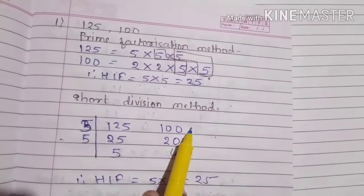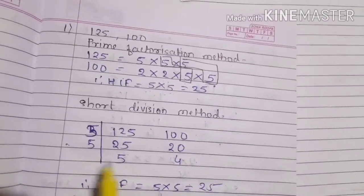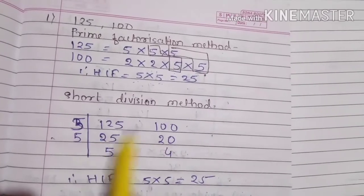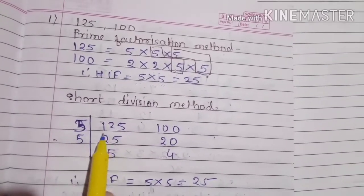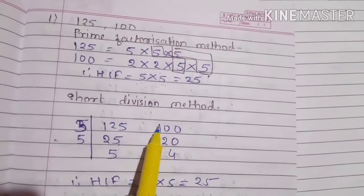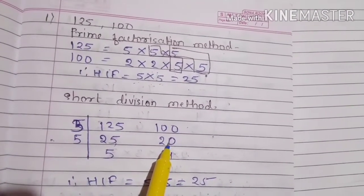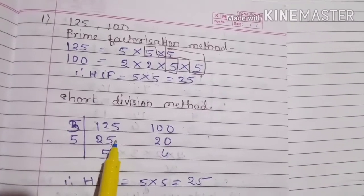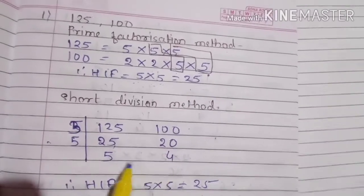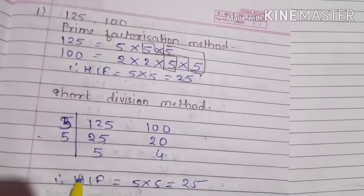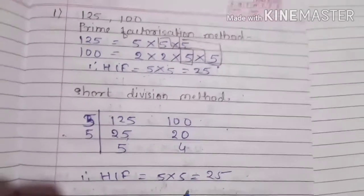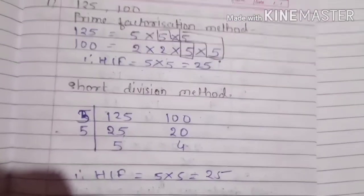Now using the short division method for 125 and 100: write them side by side and divide by the common prime number 5. Five divides 125 to give 25 and 100 to give 20. Divide by 5 again: 5 fives are 25 and 5 fours are 20. Now 5 and 4 have no common factor, so the HCF is 5 × 5 = 25. I hope you understood this video.